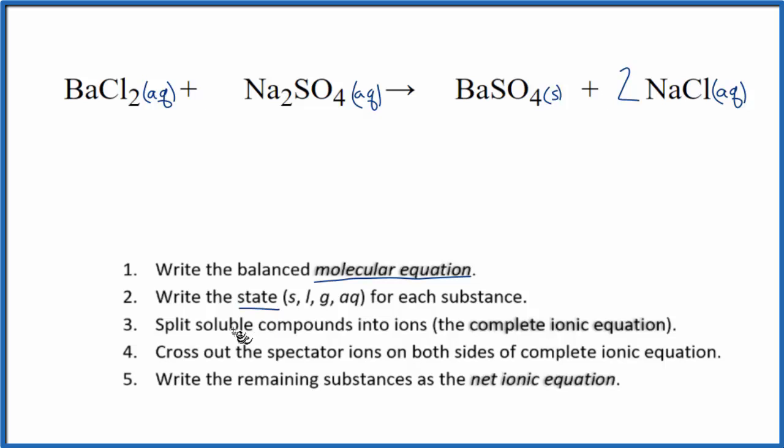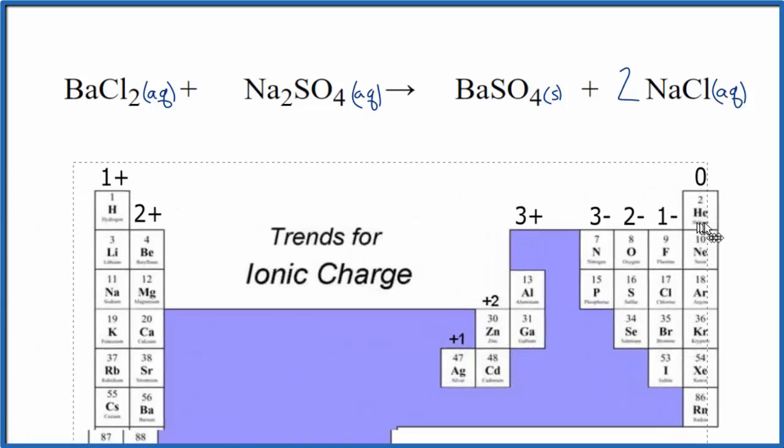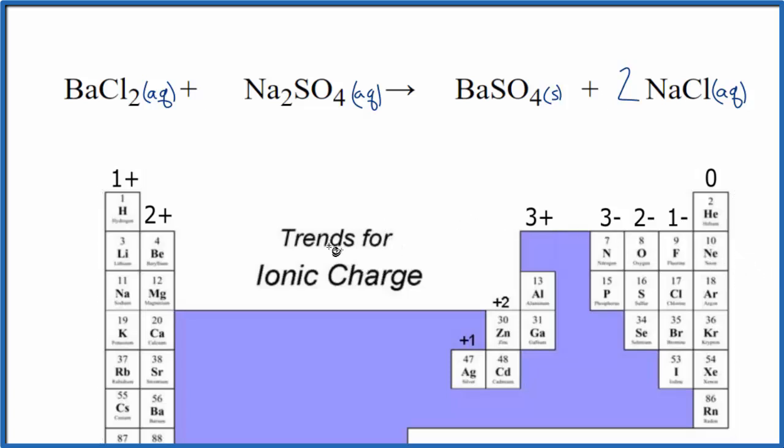Now, we can split the soluble compounds into their ions, and that will give us the complete ionic equation. Let's use the periodic table to help us out. We can find the charges on the ions, at least the single ions. Barium right here, group two, two plus.